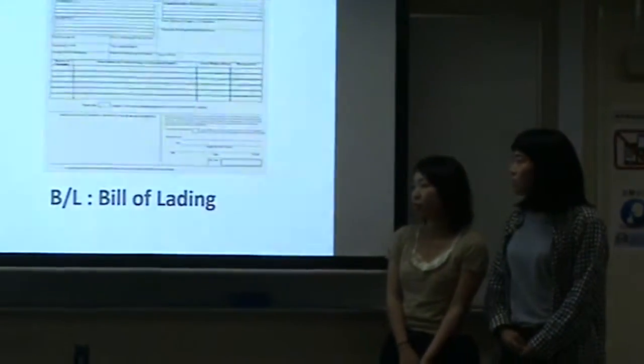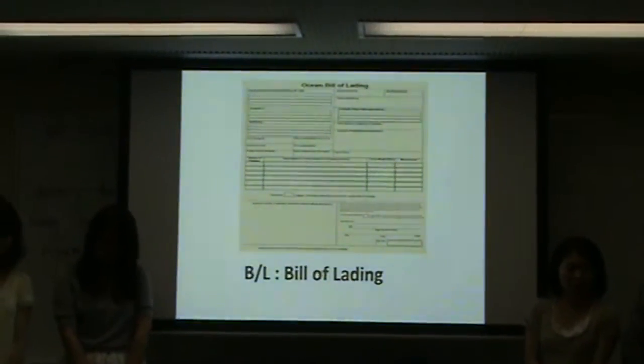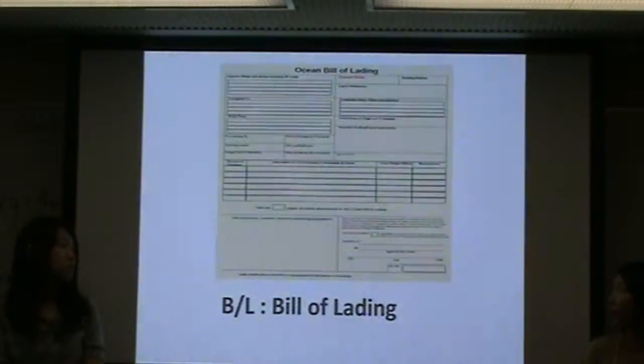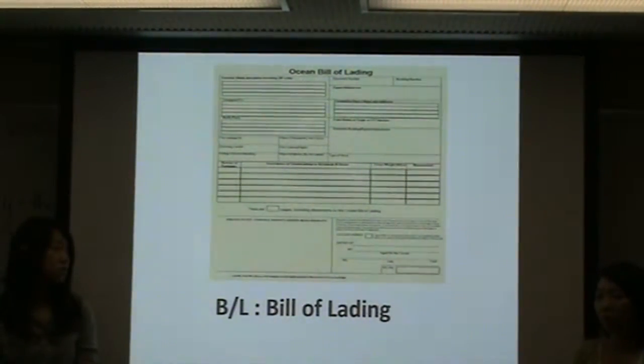Next slide please. I will talk about BE. BE stands for bill of trading. It means that when the cargo is delivered, the ship owner loads a ship with cargo. So when the owner of the cargo needs this bill, it is necessary to receive this bill from the shipping company.